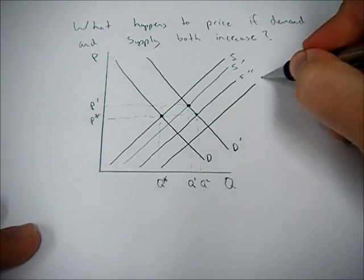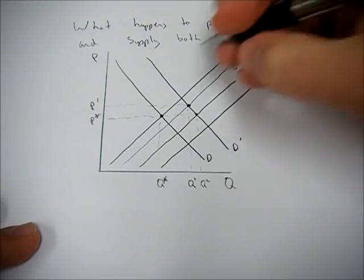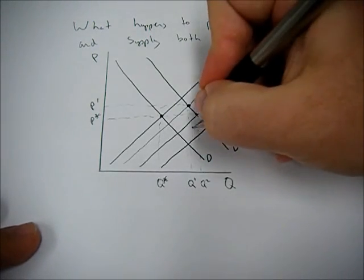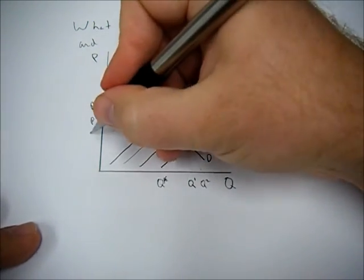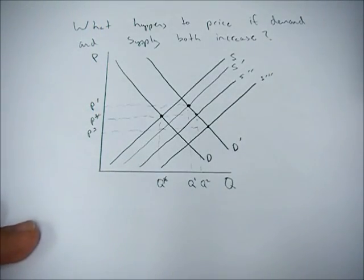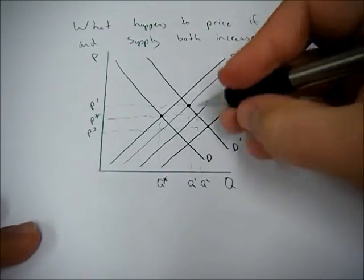And finally, if I shift the supply curve way out, our new equilibrium price is actually lower than our original equilibrium price.